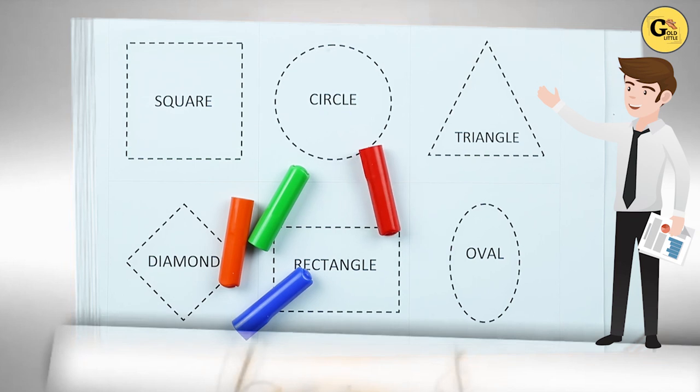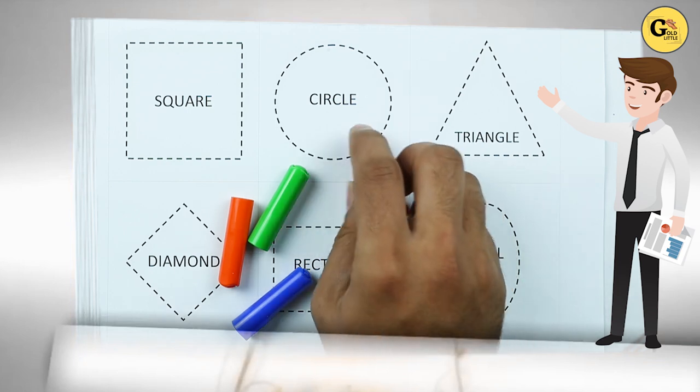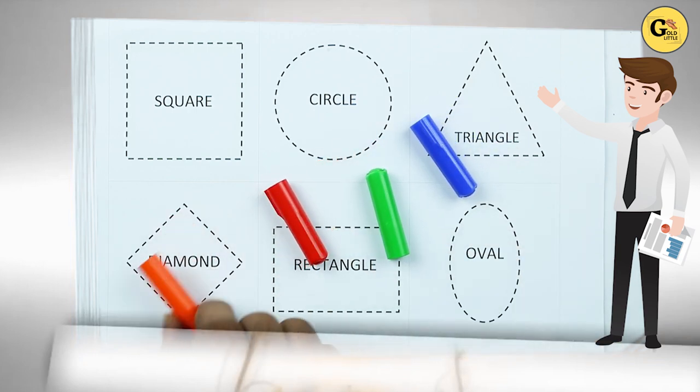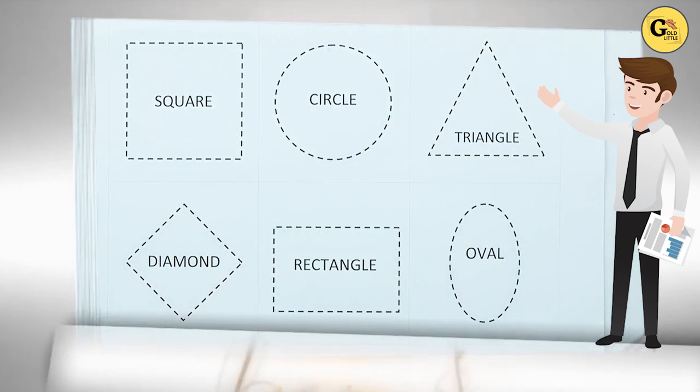Hello friends, today we learn shapes: square, circle, triangle, diamond, rectangle, oval with colors. Red color, blue color, orange color, green color. Let's start.